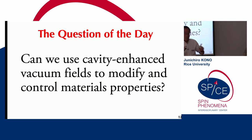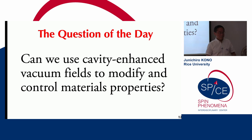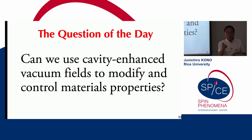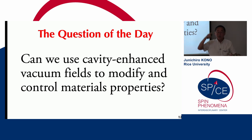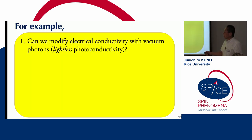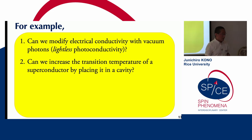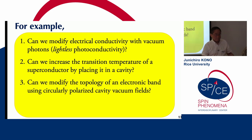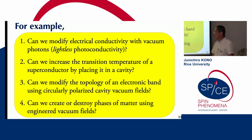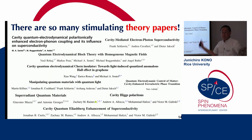So in this field of condensed matter physics, we are asking: instead of driving materials using strong laser fields, can we just place our material inside a cavity and rely on ultra-strong coupling between matter and the cavity fields — or quantum vacuum fields — to modify and control material properties? For example, can we modify electrical conductivity with vacuum photons, which would correspond to light-less photoconductivity? Can we increase the transition temperature of a superconductor just by placing it inside a cavity? Can we modify the topology of an electronic band using circularly polarized cavity fields? Can we create or destroy phases of matter just using cavity vacuum fields?